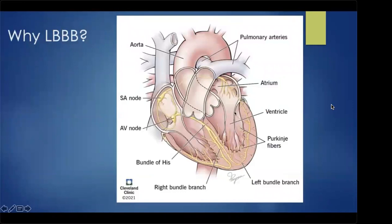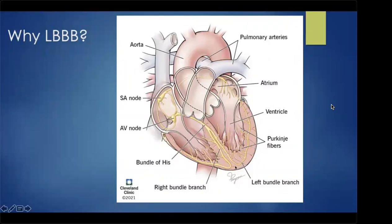Why is it that left bundle branch block is the population who benefits? The left bundle innervates the left ventricle, and when it activates, it's like a secret highway where electricity all comes at once and all walls contract synchronously. With left bundle branch block, electricity only travels down the right bundle and then has to take the local roads, producing a rocking motion. When you implant CRT, you're essentially putting in a prosthetic left bundle — pacing both sides and restoring normal wall motion.